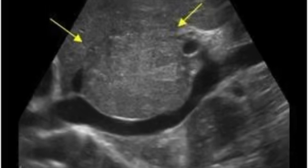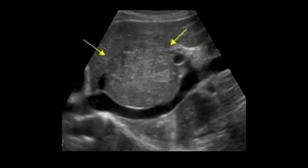Hey there, sono-peeps, Henry here. So here we have a sagittal image of the liver showing an isoechoic lesion or mass. This mass is located anterior to the IVC. On top of being isoechoic, it is also slightly heterogeneous, especially when compared to the rest of the liver echotexture.